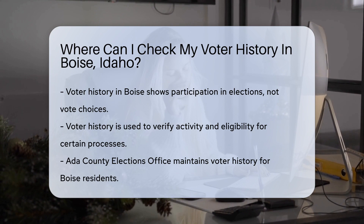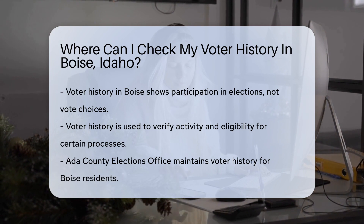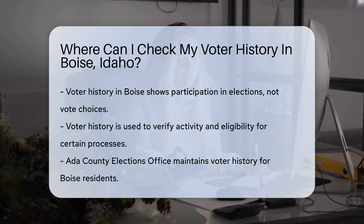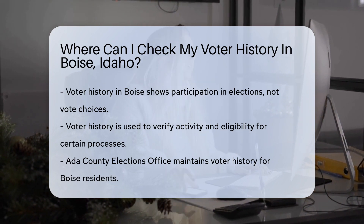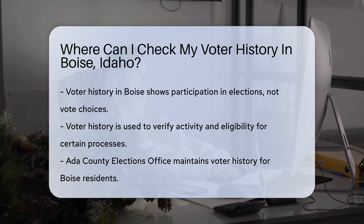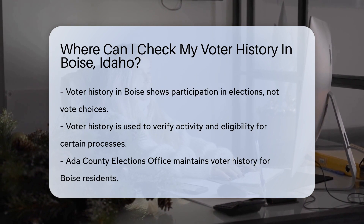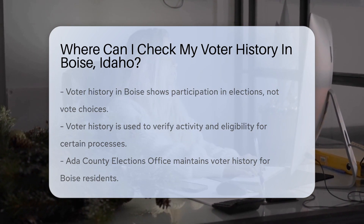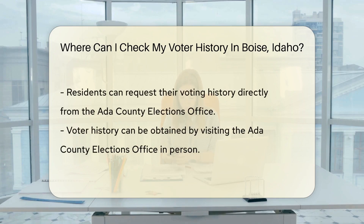Your voter history is a record of your voting activity. It shows which elections you've participated in, not who you voted for. This info is often used to verify voter activity and eligibility for certain processes.